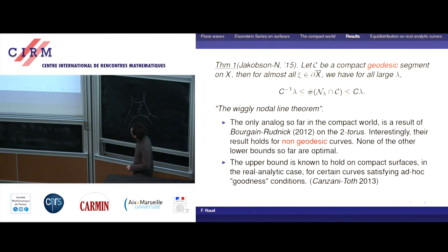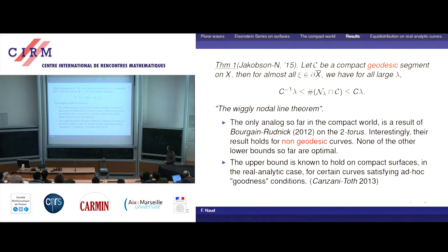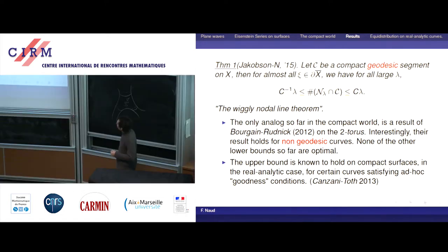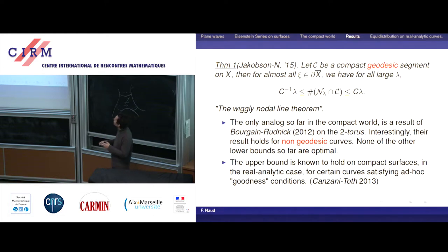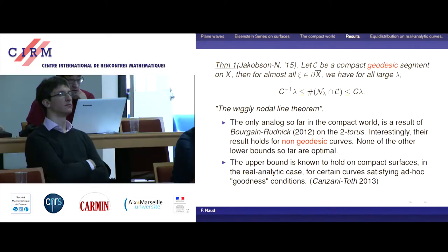In the compact setting, the only result I know which is close to this one is on the torus by Bourgain and Rudnick — actually it's a bit weaker, because on the lower bound they lose some epsilon. It is quite interesting because it is very transversal to their result. In Bourgain–Rudnick's statement, they need to look at positively curved curves, away from geodesics. Here it's the opposite: we have to look at geodesics and be far away from horocycles.